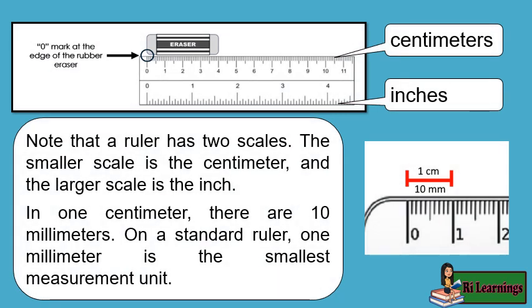Note that a ruler has two scales. The smaller scale is the centimeter and the larger scale is the inch. In 1 centimeter, there are 10 millimeters. On a standard ruler, 1 millimeter is the smallest measurement unit.